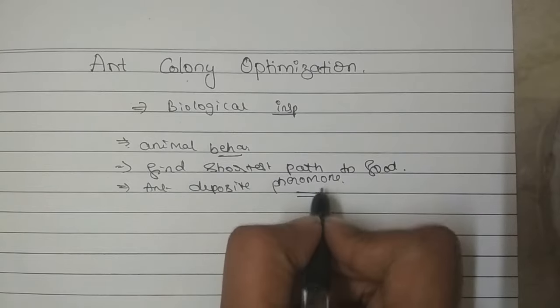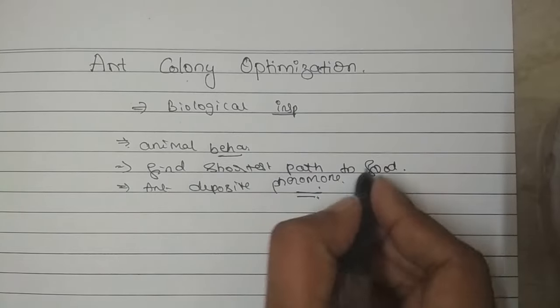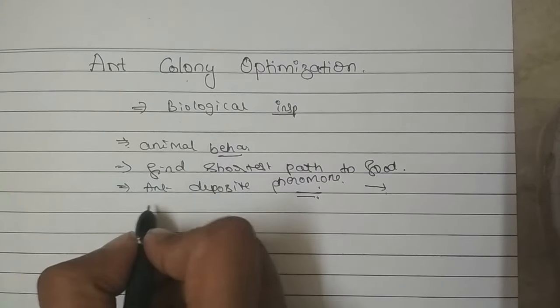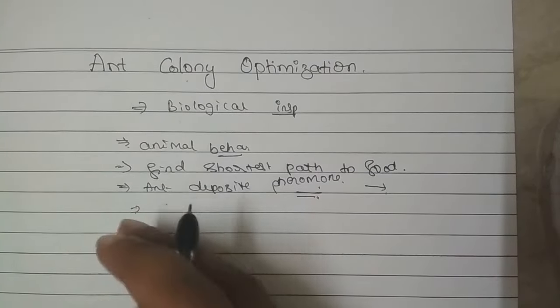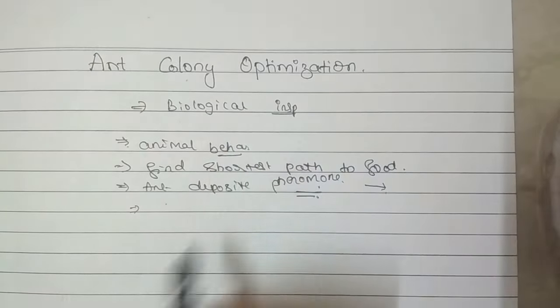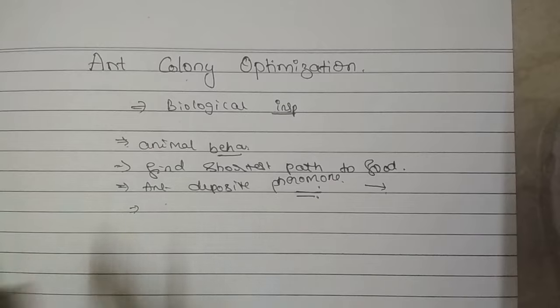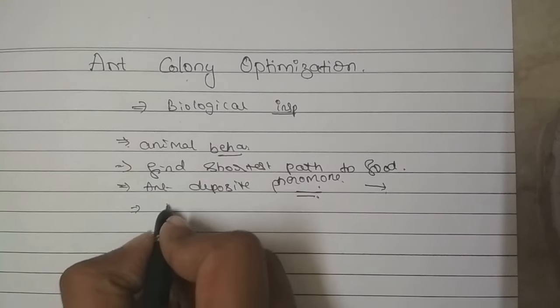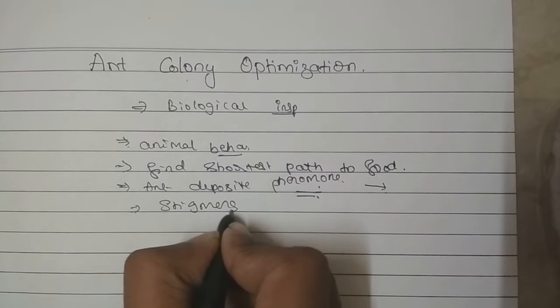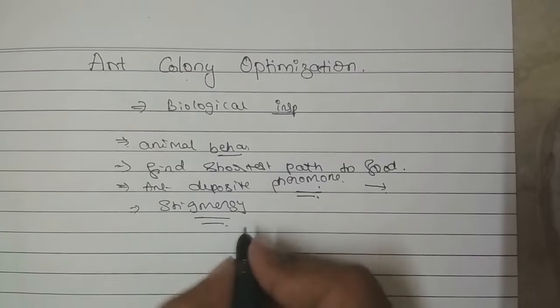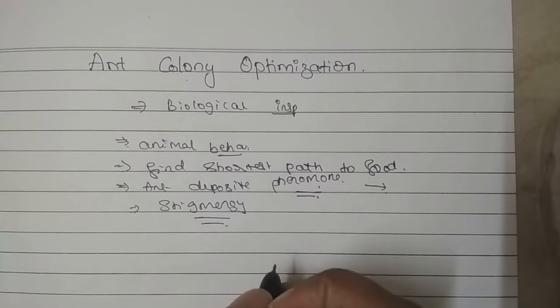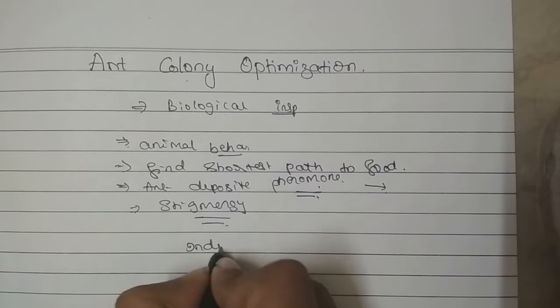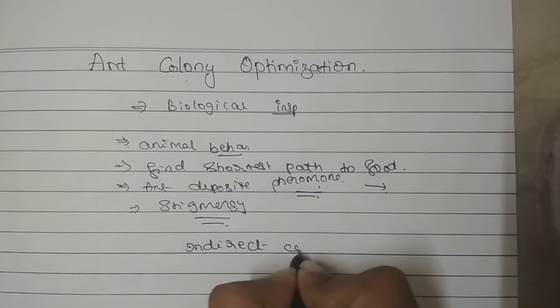The ant deposits pheromone on the path where it travels. But this pheromone is in such a way that it will evaporate over time. And as we all know, the animals cannot talk to each other directly, so they will communicate with each other via environment. Okay, so that is called as stigmargy. I repeat, stigmargy. In a better definition, it would be indirect communication via interaction with the environment.